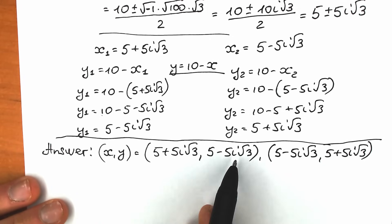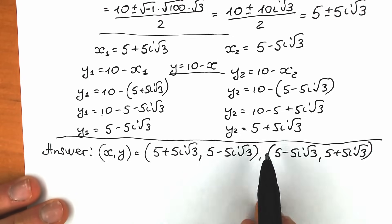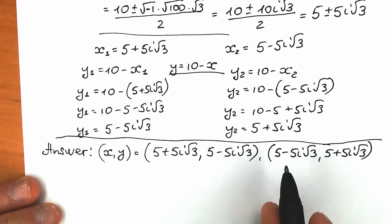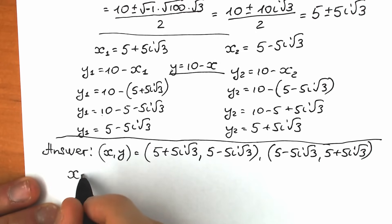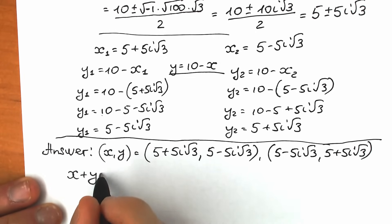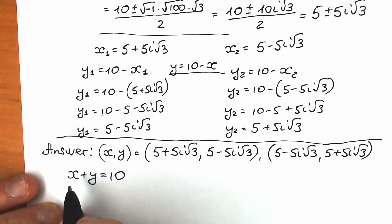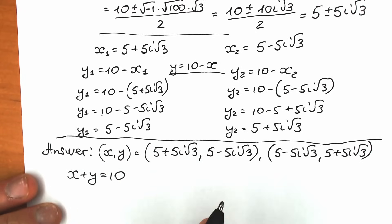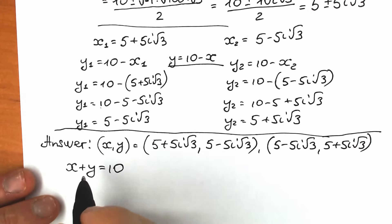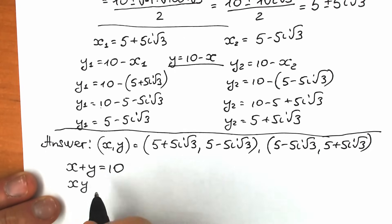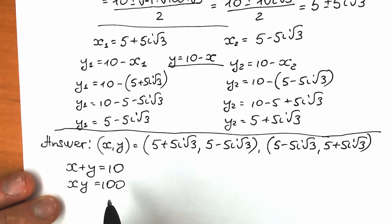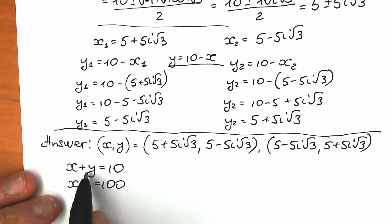We don't need to check both pairs, because addition and multiplication are commutative — x plus y and y plus x give the same result, and so does the product xy. So checking one pair is sufficient.